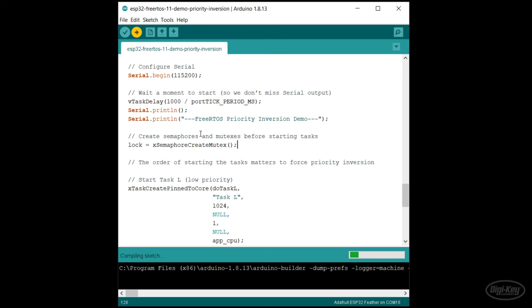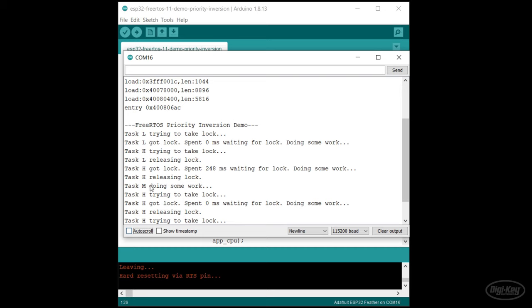We open a serial monitor and sure enough, task H was not blocked by task M anymore. When task H tried to obtain the lock, task L's priority level was raised to that of task H so it would release the lock sooner. The worst thing we had happen is some bounded priority inversion, which isn't nearly as bad.